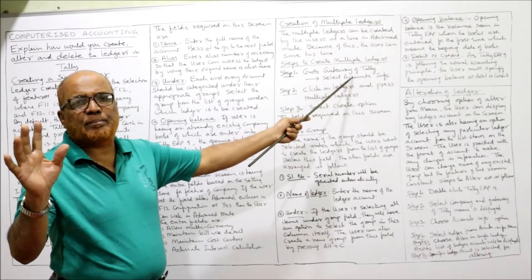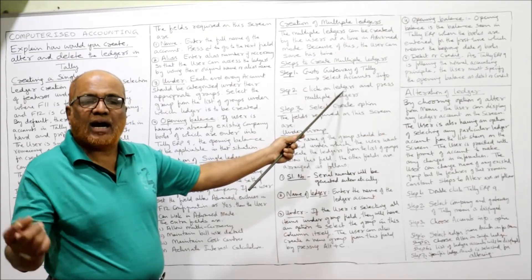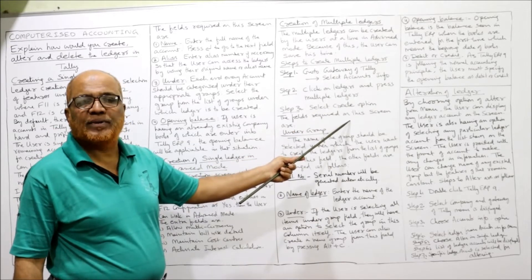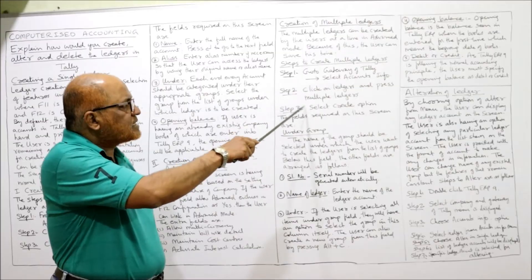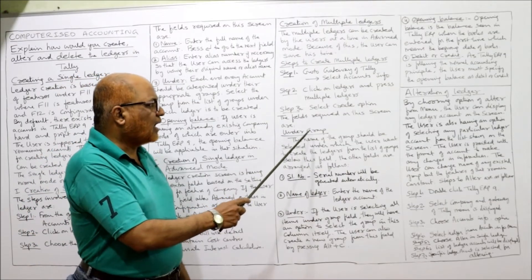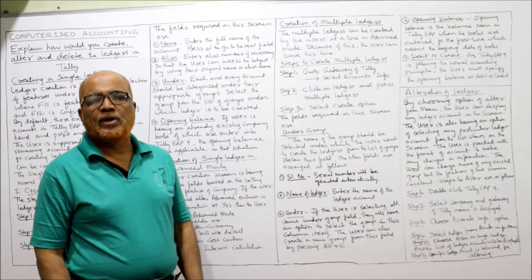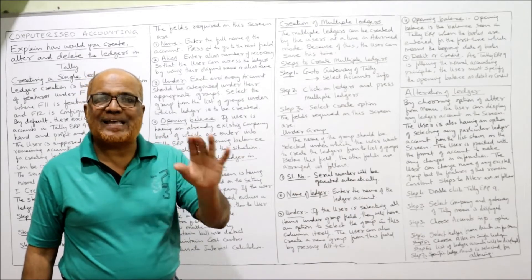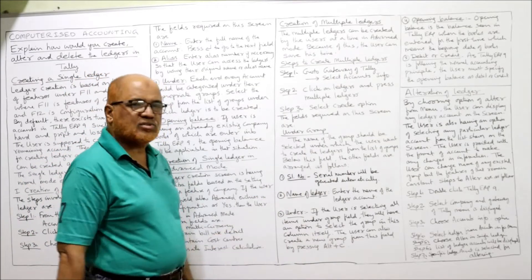The steps to create multiple ledgers: first go to Gateway of Tally and select Account Info, from Account Info select Ledgers, under Ledgers select Multiple Ledgers, then select the Create option. After these steps, a screen will require some fields to be filled. The first field is Under Group — the name of the group should be selected under which the user wants to create the ledger from the list of groups.